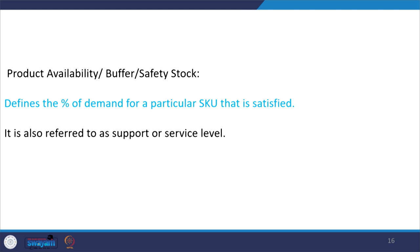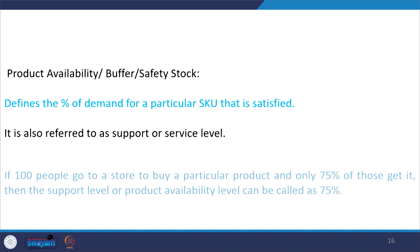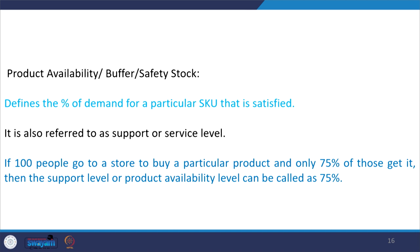Product availability indicates the percentage of demand for a particular SKU that is satisfied — also referred to as support level or service level. If 100 people go to a store to buy a particular product and only 75 percent get it, then the support level or product availability level is 75 percent.